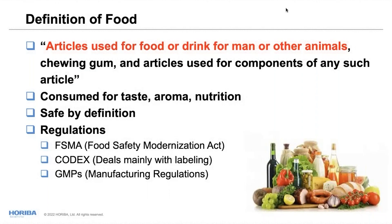Regulations around foods are threefold. You have FSMA — the Food Safety Modernization Act — which gave the FDA more power over how food is grown, processed, and handled through the whole chain to make sure it's safe.